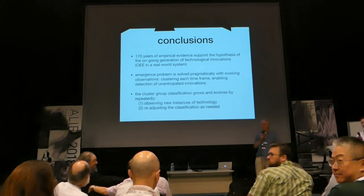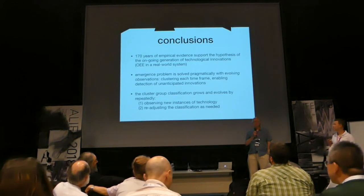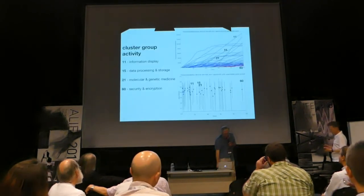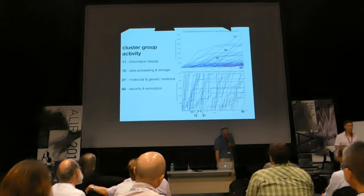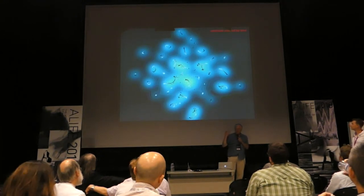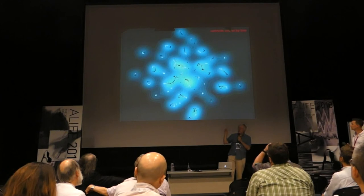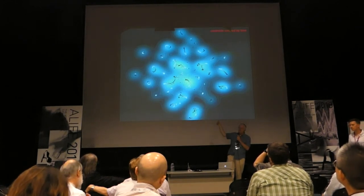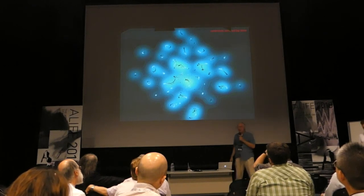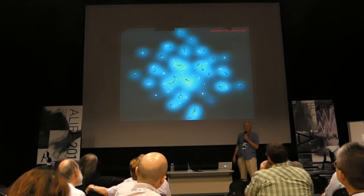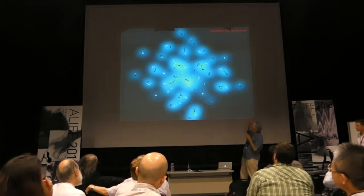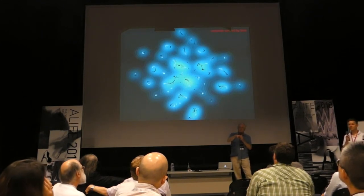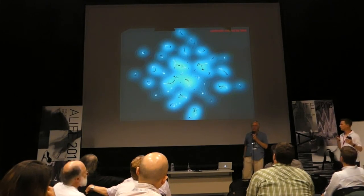The T-SNE projections that you had — was that using the Doc2Vec vectors, or after you've already clustered them into groups? Each cluster centroid is a point in the 300-dimensional space, and each of those was then projected down. So this is 25 cluster centroids for each of 100 time steps — 2,500 centroid points — projected from 300 dimensions, given by the Doc2Vec algorithm, down to 2D, given by the T-SNE projection.